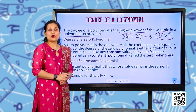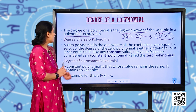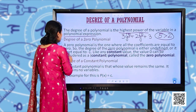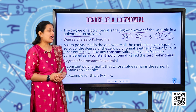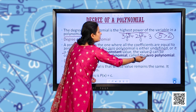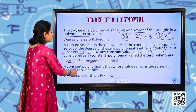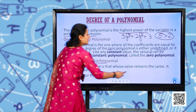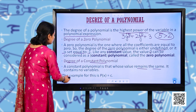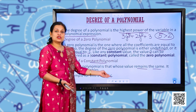Now the degree of a zero polynomial: a zero polynomial is one where all the coefficients are equal to 0. The degree of the zero polynomial is either undefined or set equal to −1. For a constant polynomial — one whose value remains the same and contains no variables, such as P(x) = C — the degree of the constant polynomial is 0.